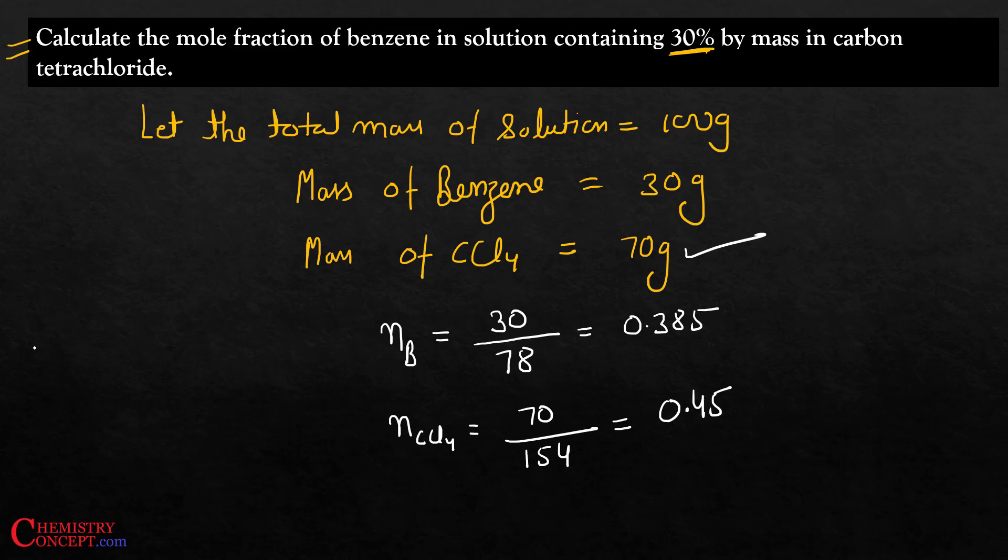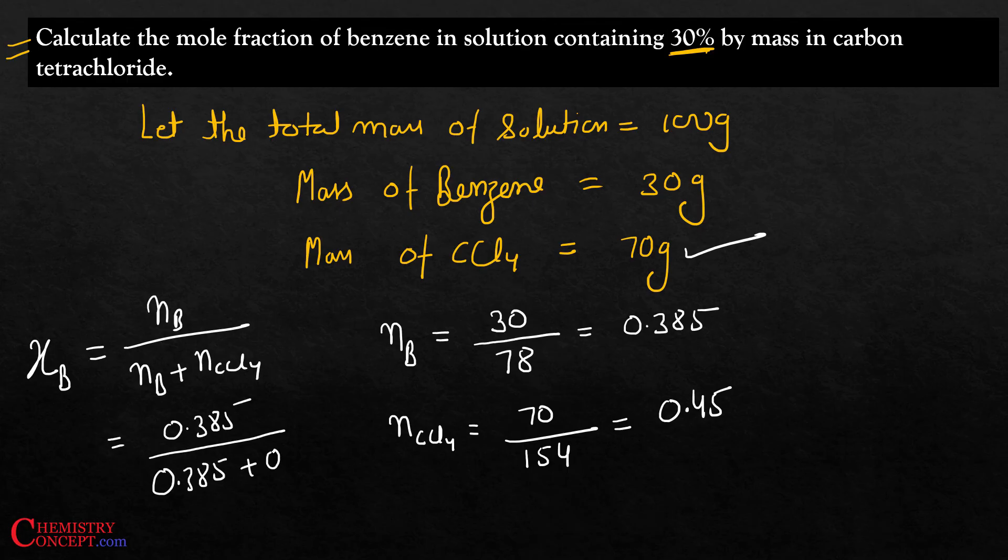Now what do we need to find out? Mole fraction. Mole fraction of benzene will be number of moles of benzene upon total number of moles. So it will be 0.385 divided by 0.385 plus 0.45, which comes out to be 0.461.